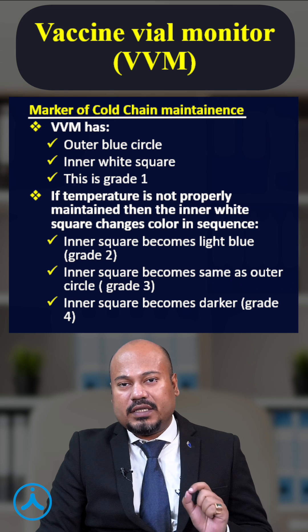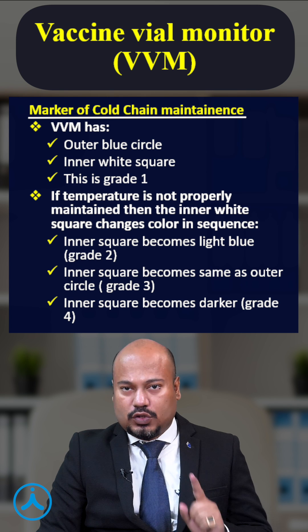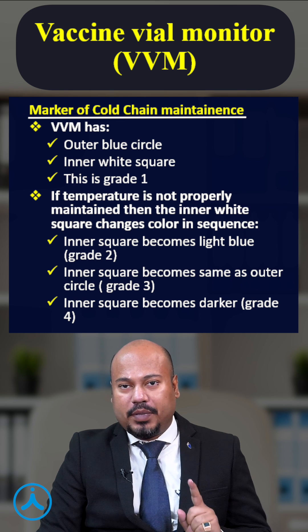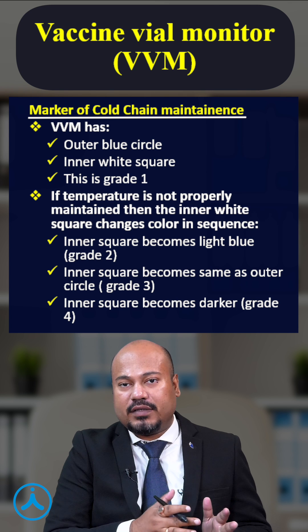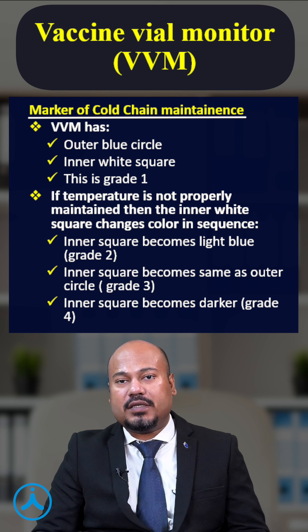What is cold chain? Cold chain is a system of storage, temperature maintenance, and transport of vaccines from the site of manufacture to the point of administration.